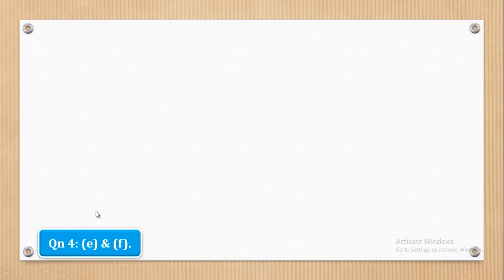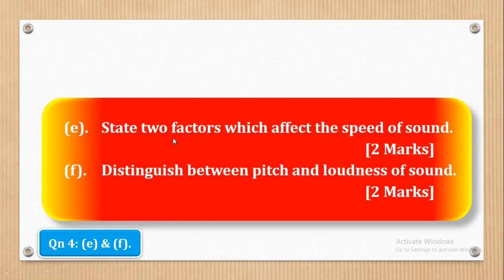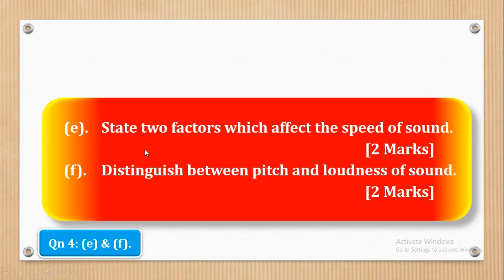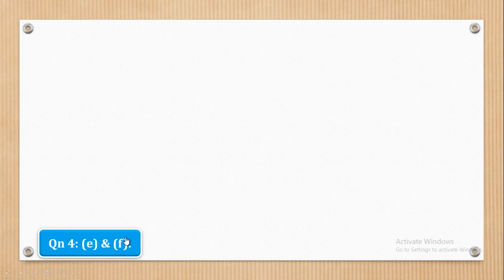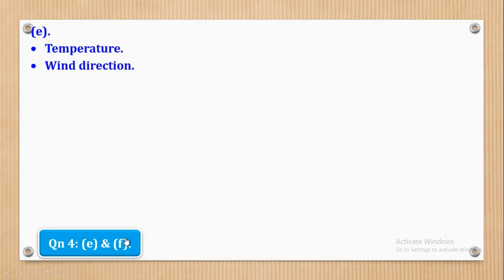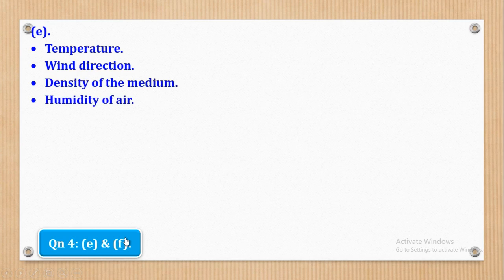Now we shall go to part E and part F. Part E says: state two factors which affect the speed of sound — that is two marks. Part F says: distinguish between pitch and loudness of sound. For part E, the factors are: temperature, wind direction, density of the medium, and humidity of air.